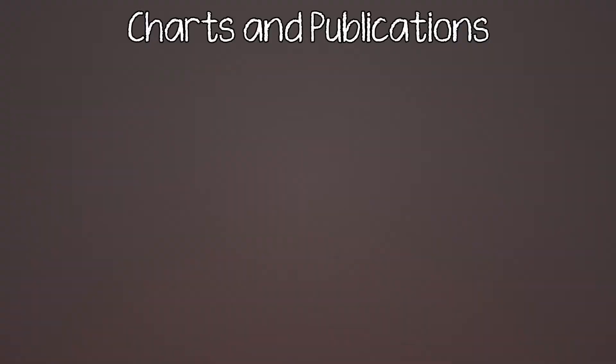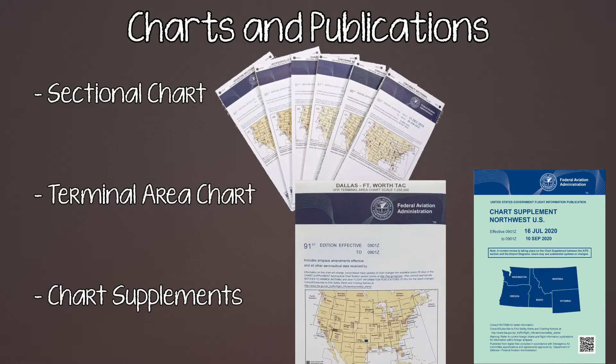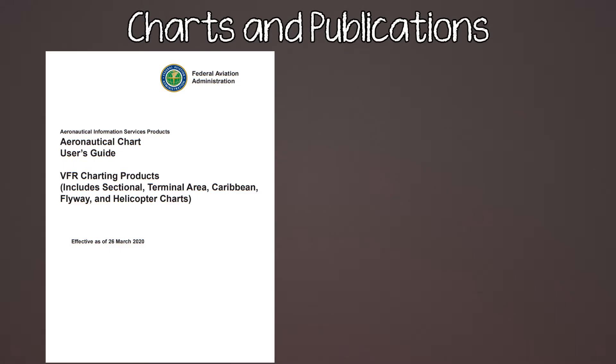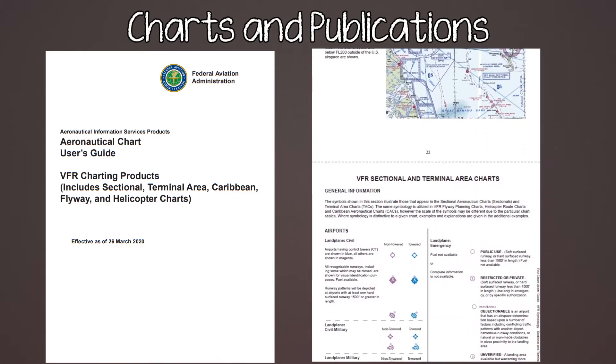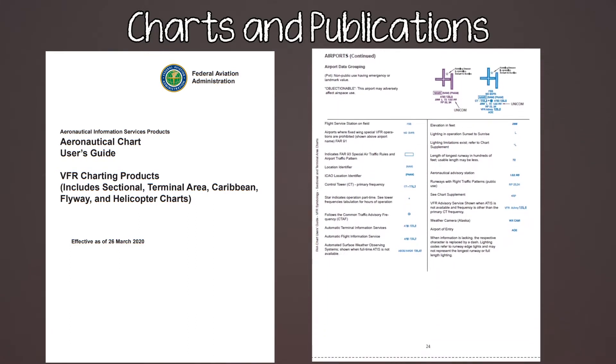There are a couple of publications you need to be familiar with when you decide to navigate. They include the sectional chart, terminal area chart, and the chart supplement, and we'll cover all of these in this video. Obviously you want to use current publications, which means don't use anything in this video because it could be months or years after the fact. For all the symbol charts and markings, there's the aeronautical chart users guide — it's a great read.